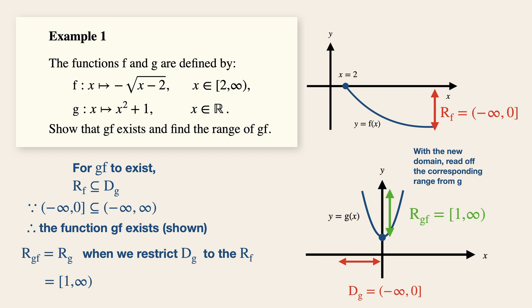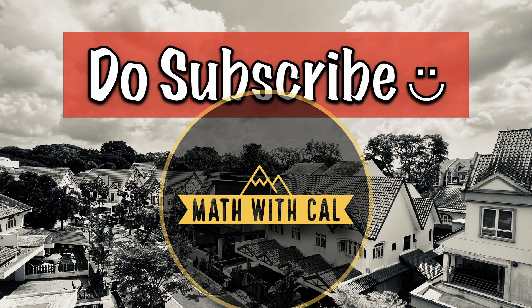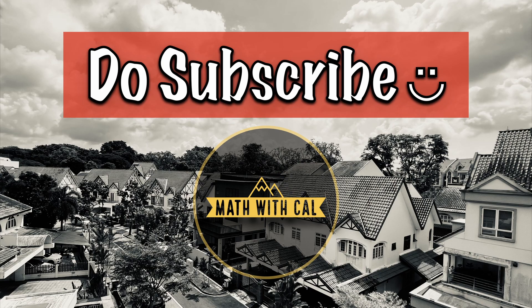Now take note that this is an inclusive sign because the domain of G includes zero. Be extra careful over here. Always put a curved bracket beside an infinity sign. Now before we move on to the next example, do remember to subscribe to see more valuable math techniques that will benefit you.